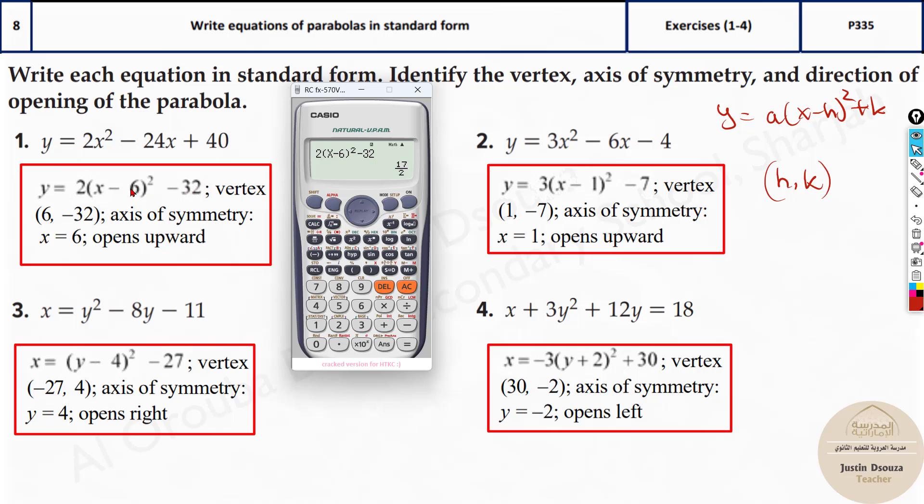Now, from here you can easily tell which is the vertex. Minus 6 and this one, you need to change the sign for the h value. That is the x value of the vertex. If it is minus 6, it will be plus 6. But this one as it is, minus 32 is the y value of vertex. The axis of symmetry is whatever the x value of the vertex, that is 6. And it opens upwards. Why? Because this is a quadratic equation which is having positive sign, means it opens upwards.